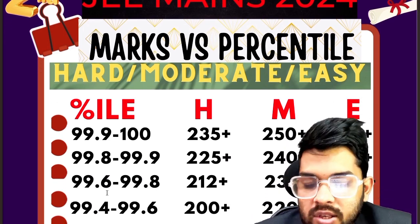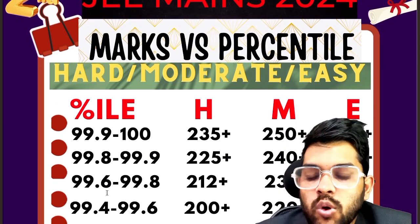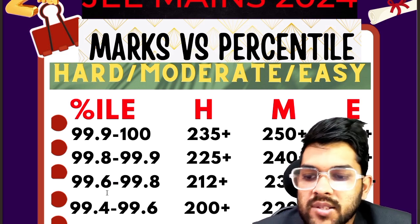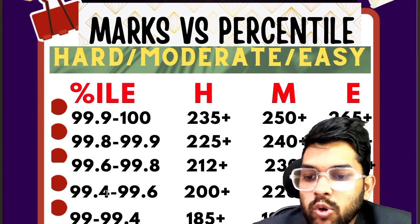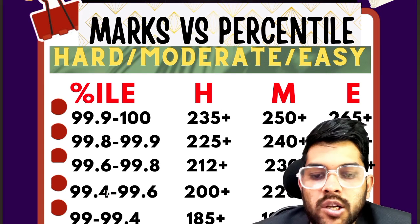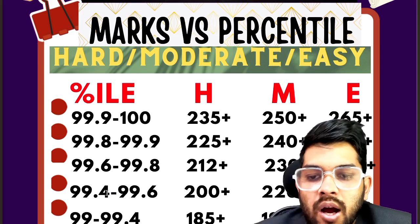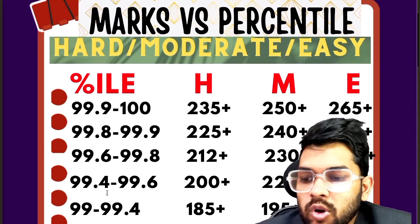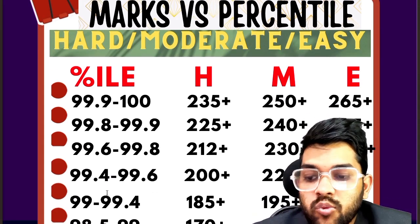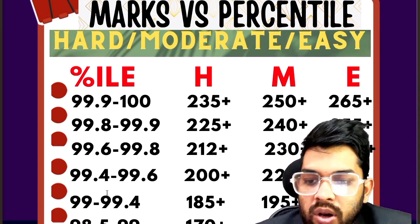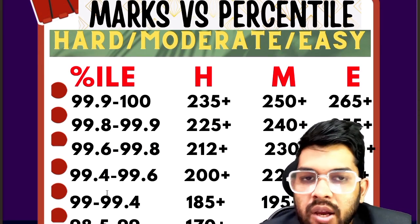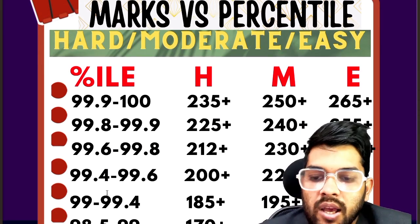For 99.6 or more, 212 marks for hard, 230 for moderate, and 240 for easy. For 99.4 or more, it is 200, 220, and 230 marks for hard, moderate, and easy paper. For 99 to 99.4 percentile, the marks required are 185, 195, and 250 — essentially the 99 percentile benchmark.